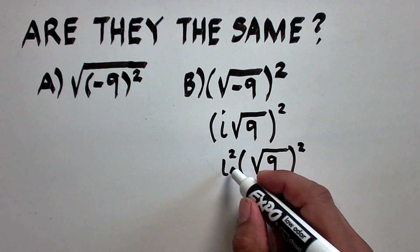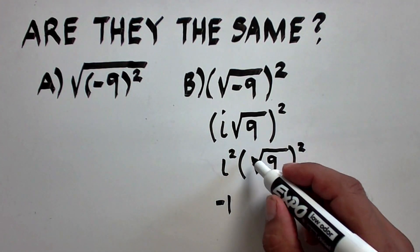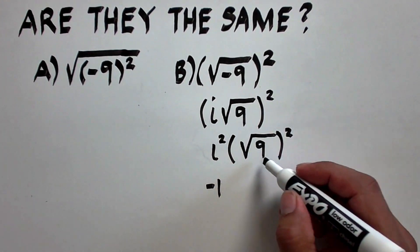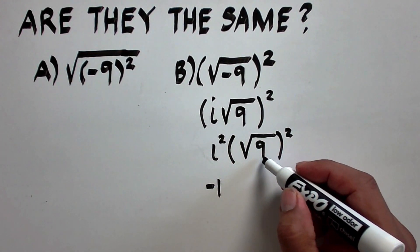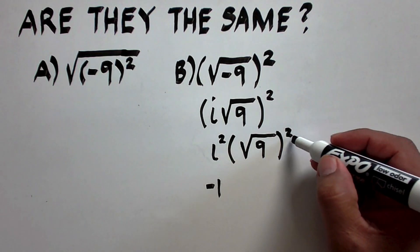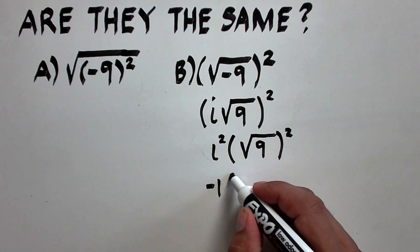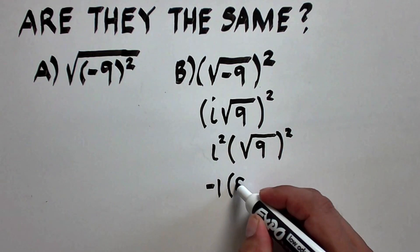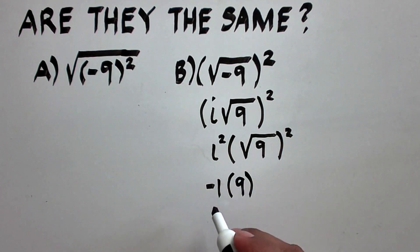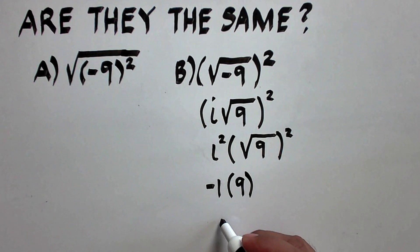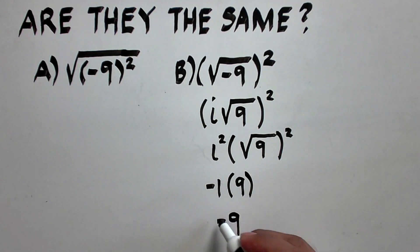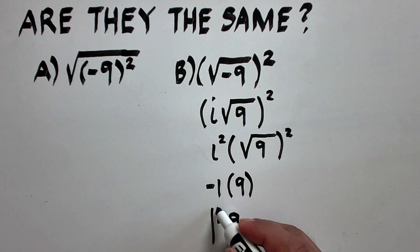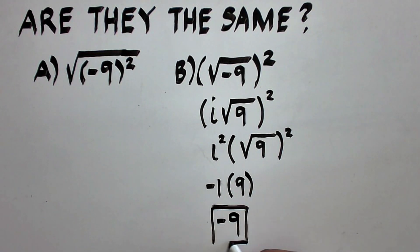i squared is negative 1. And here we are after the principal square root of 9, which is positive 3, and raising that to 2, that is positive 9. And negative 1 times positive 9 is negative 9. Therefore, letter B is negative 9.